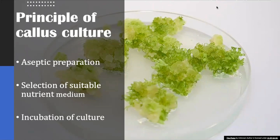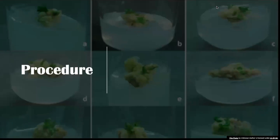Next, we need to consider what kind of environment we are giving to the callus culture. For instance, a callus can be grown in the dark, or it may require 16 hours of light period and 8 hours of dark period. This will depend on the kind of callus you are aiming for and from which part of the plant you are trying to induce the callus. All these characteristics will differentiate the callus depending upon its type and explant source.